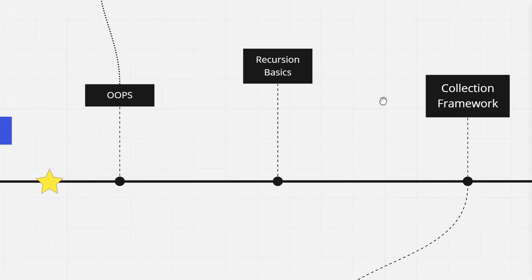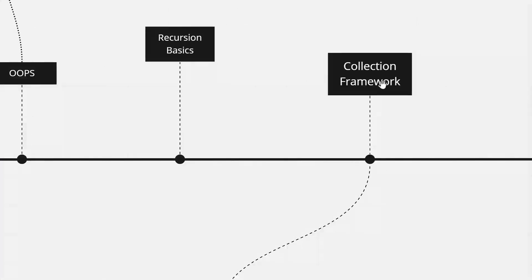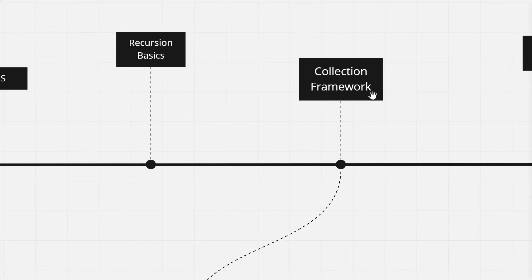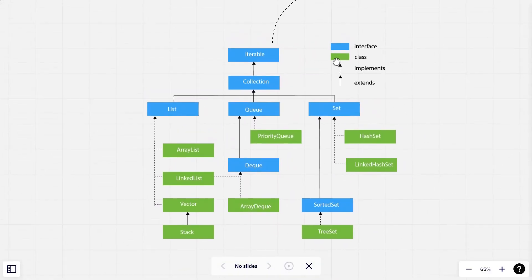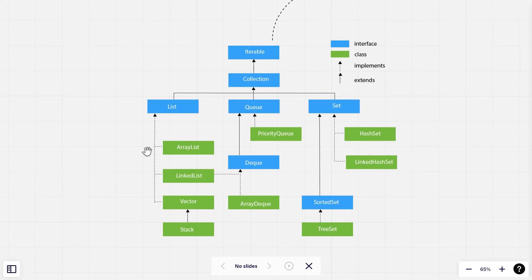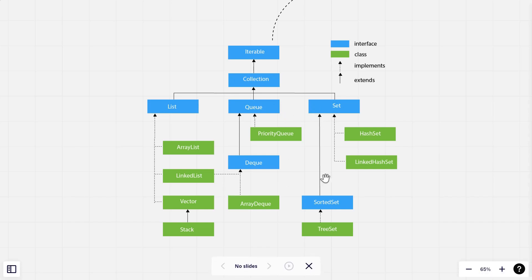After recursion, we will move ahead to the collection framework — if you are working in C++, you can refer to the STL. In the collection framework, as you can see there is a huge flowchart — we will be learning about list, queue, set, stack, and everything.